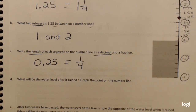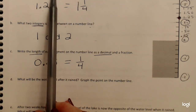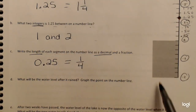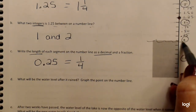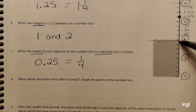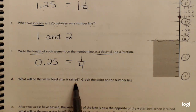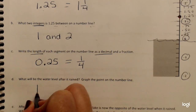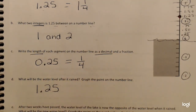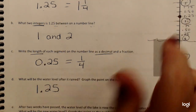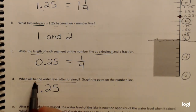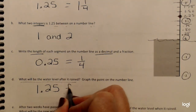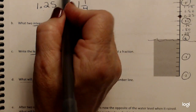Part D: what will be the water level after it rained? Graph the point on the number line. The water level started at 0 and rose to 1.25, so we already plotted that dot. The water level will be 1.25 feet, so we label that point 1.25 feet.